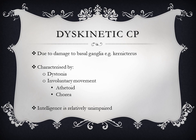Chorea is abrupt, irregular, jerky involuntary movements of the limbs and face. Please watch the videos on athetoid and chorea. In this type of cerebral palsy, intelligence is relatively unimpaired.